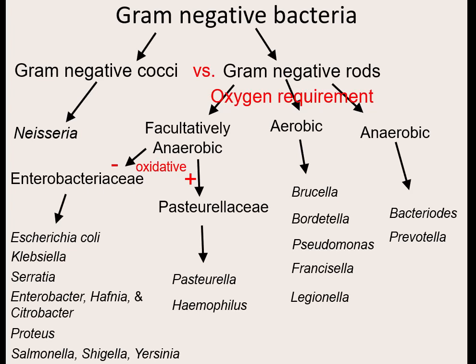Because there are so many bacteria that fall into the facultatively anaerobic group, we further divide them based on a test called an oxidase test, which we'll be doing in lab. Most of them are oxidase negative, but a couple are oxidase positive. We are going to start talking today about all the bacteria in the group called Enterobacteriaceae. Because it has the beginning word 'entero,' where are these bacteria found?